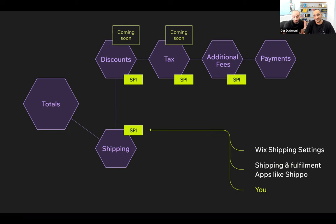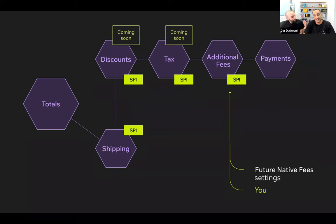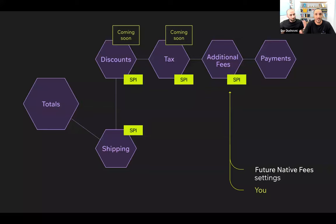The second SPI we're going to talk about today is the additional fees SPI, which is totally brand new. We are very excited about it because you are the first ones to use it. We are releasing today the mechanism for you to get all the cart, visitor, member, and line items information when you call Totals by creating a cart or checkout, and then the ability to create your logic to charge an extra fee and return an array of extra fees that we will present across our e-commerce platform pages.